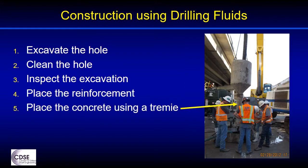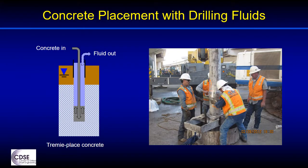Next step: place the concrete using a tremie. In this photo you see a tremie in place and the concrete is being delivered by a pump line into the top of the tremie hopper. The tremie has to be watertight, as you can see with this sectional tremie that includes watertight joints, each joint containing an internal O-ring seal. The workers here have even covered the outside of the joint with plastic wrap. A separation device, which is often called a plug, a pig, or a rabbit, is placed into the tremie. This device travels down the pipe ahead of the concrete, isolating it from the fluid and minimizing the exposure of the concrete to the drilling fluid.